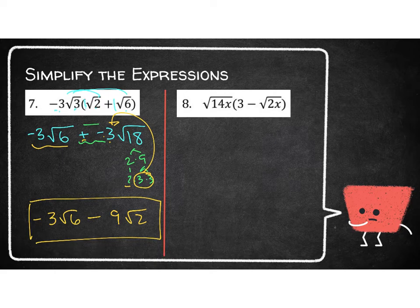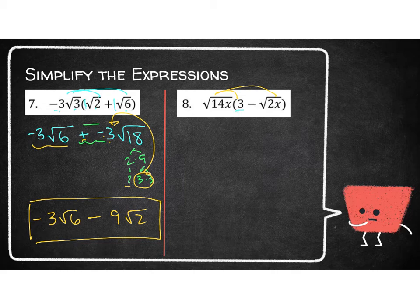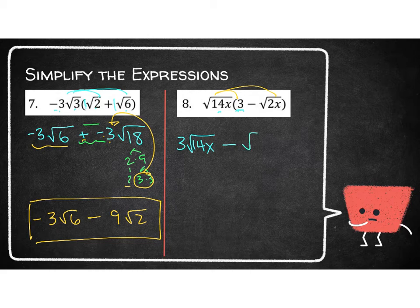Let's try number 8. I have the square root of 14x that needs to be distributed to the 3 and also to the square root of 2x. Be careful here, because our brains want to tell us to multiply the 14 and the 3 together. But 3 is not under a radical. So when I multiply those two things together, I just end up with 3 times the square root of 14x. Then the second term gives me the square root of 28x squared.